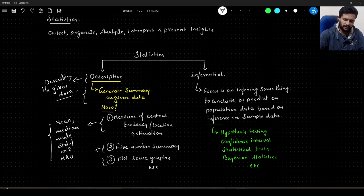When it comes to inferential statistics, the focus is on inferring something on the given data so that we can conclude or predict something on the entire population. Whatever data we have at hand will be called sample data, and using that sample data we will conclude or predict something on the population data.